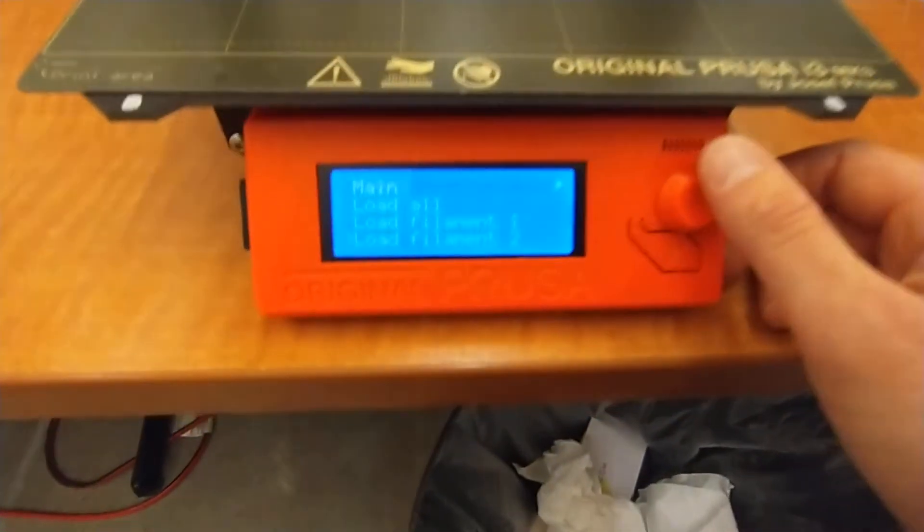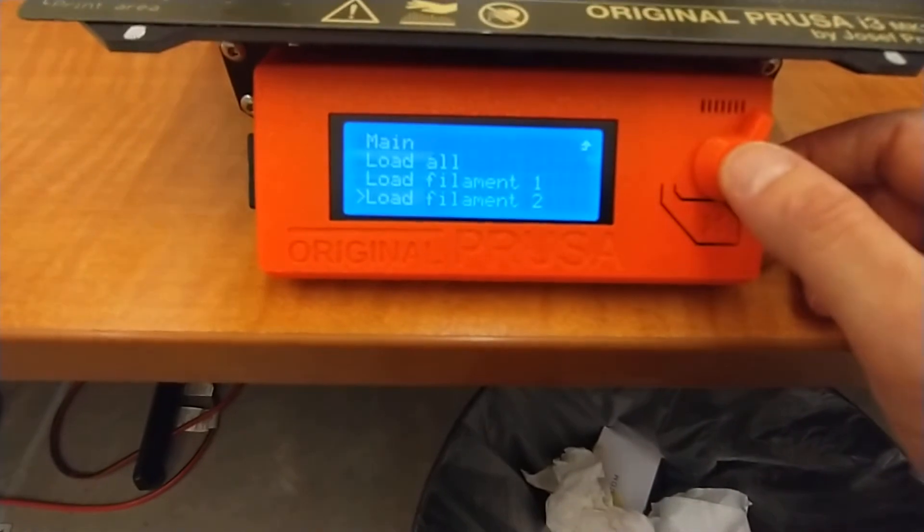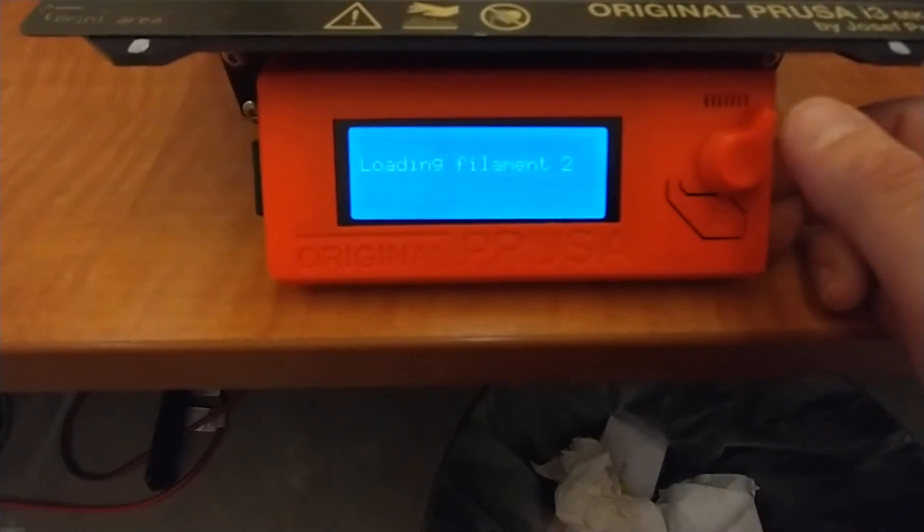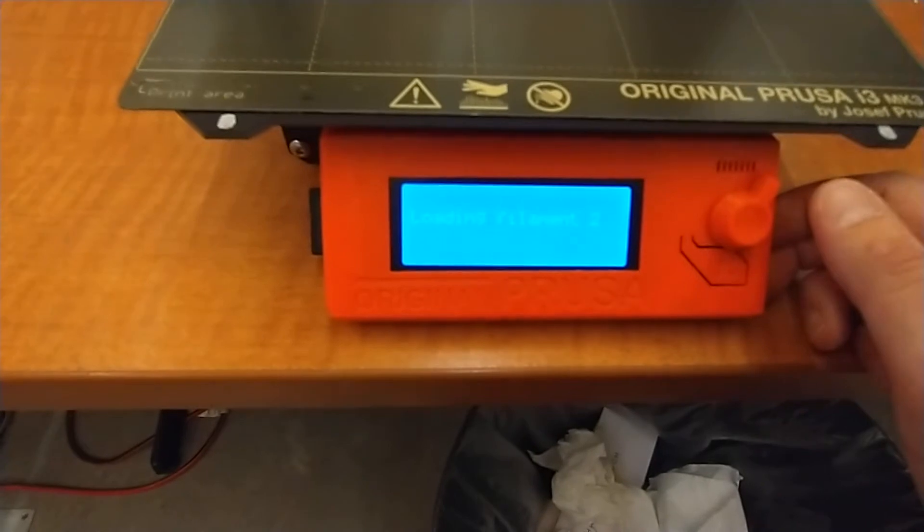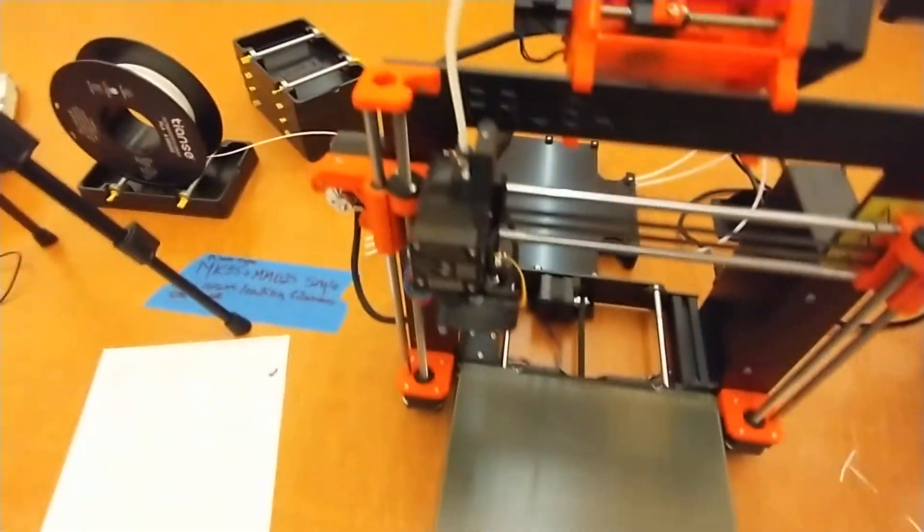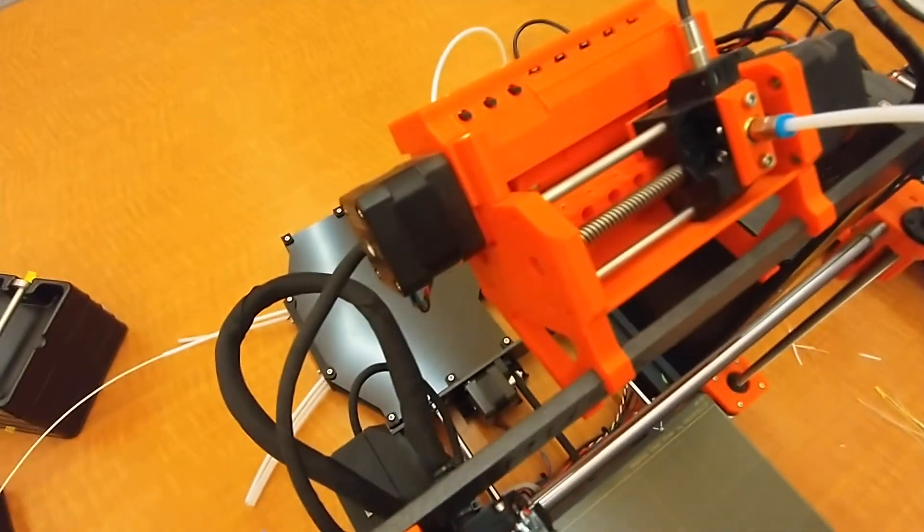We can scroll down, make sure we've got filament two selected, hit the button. And then it's going to load filament two after the MMU goes through its calibration.